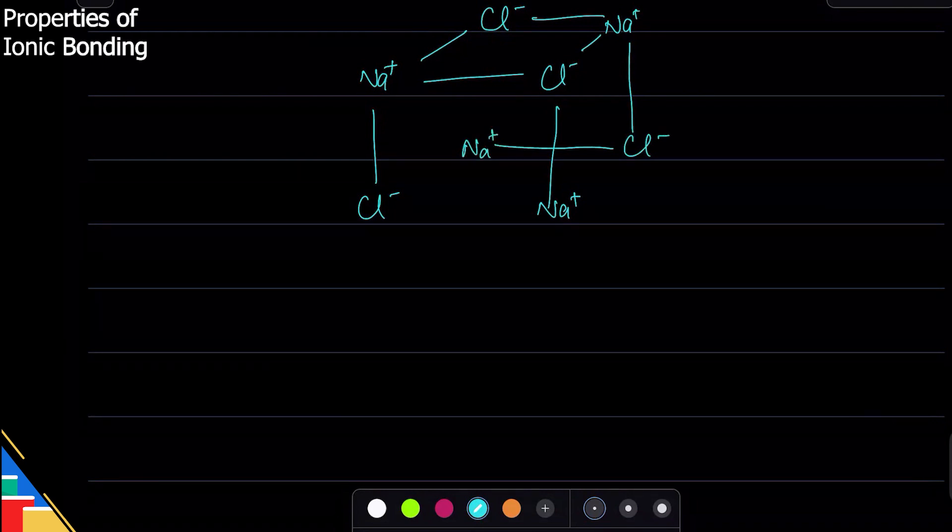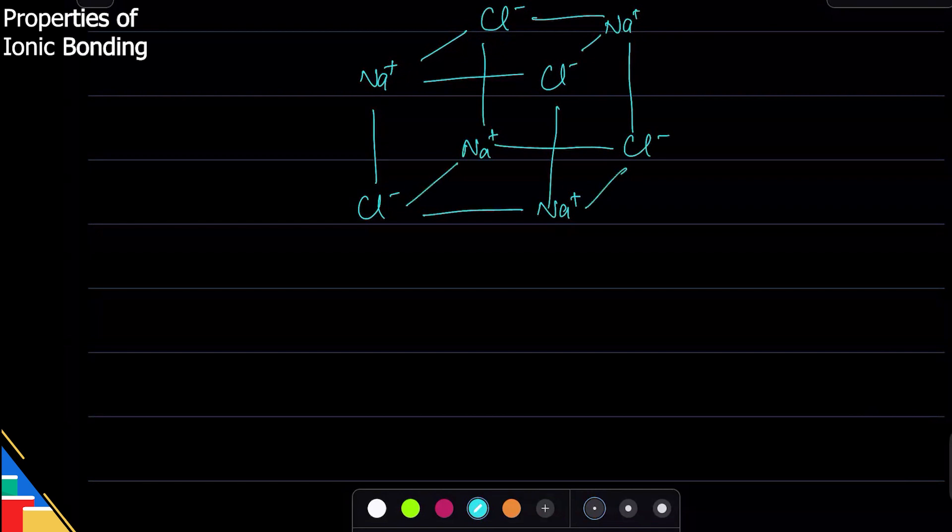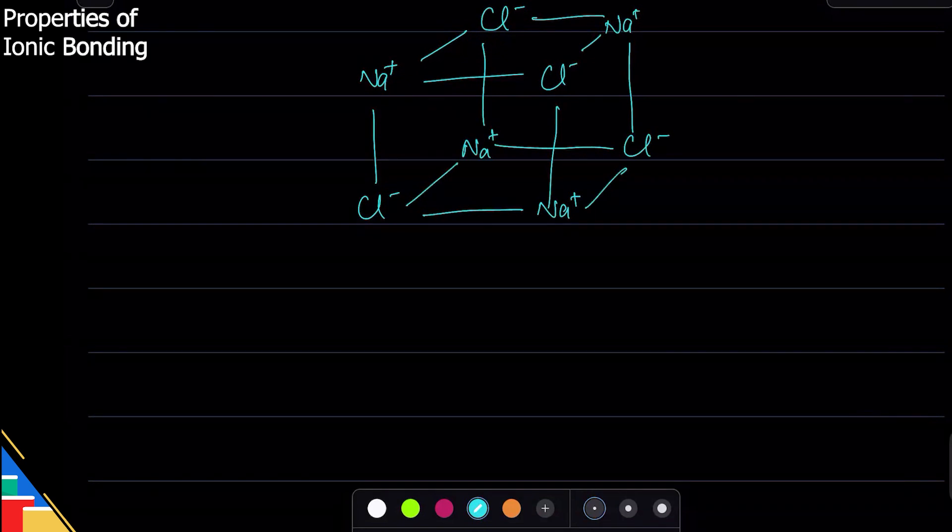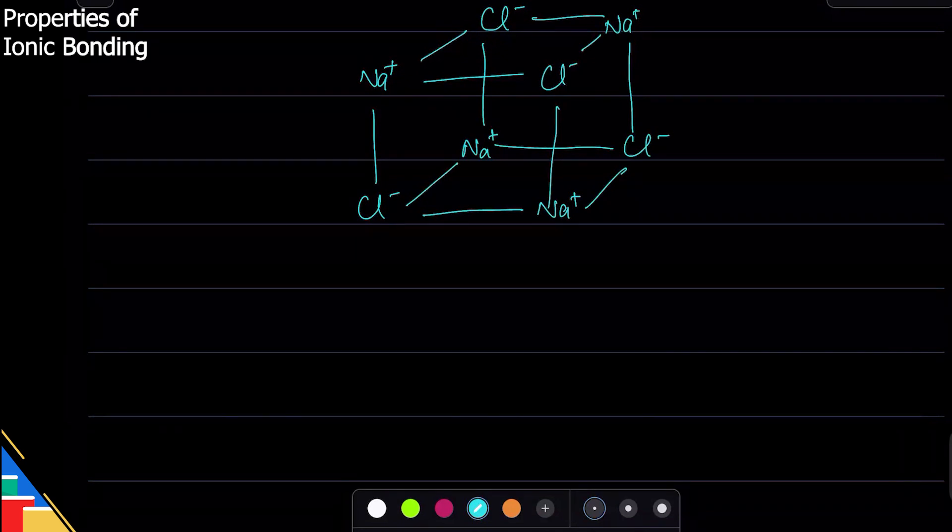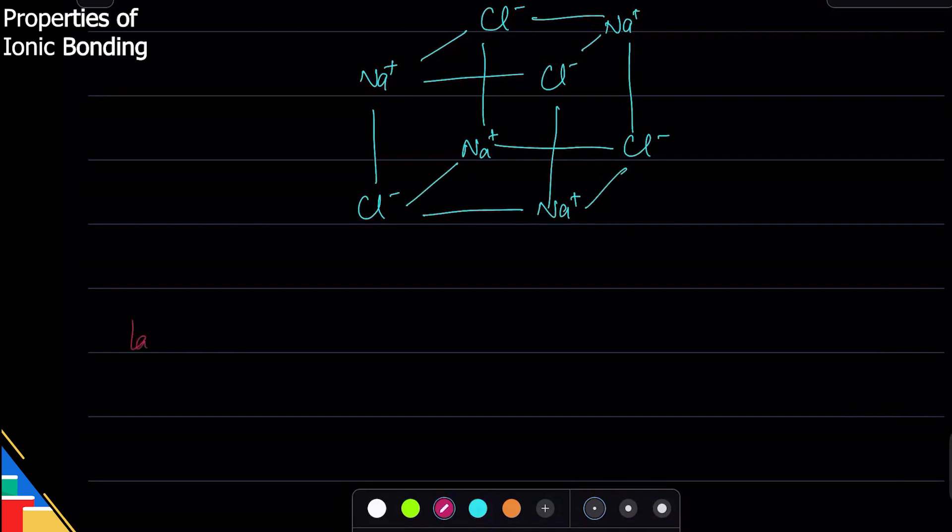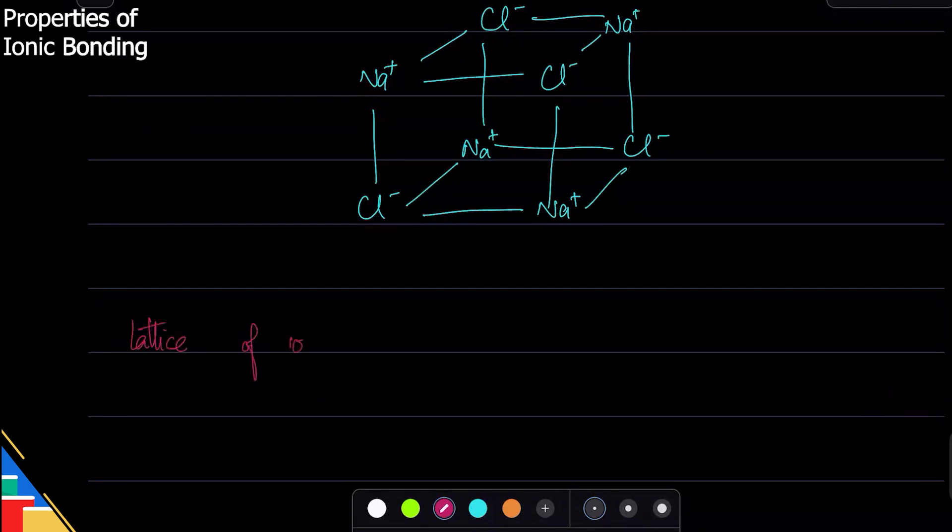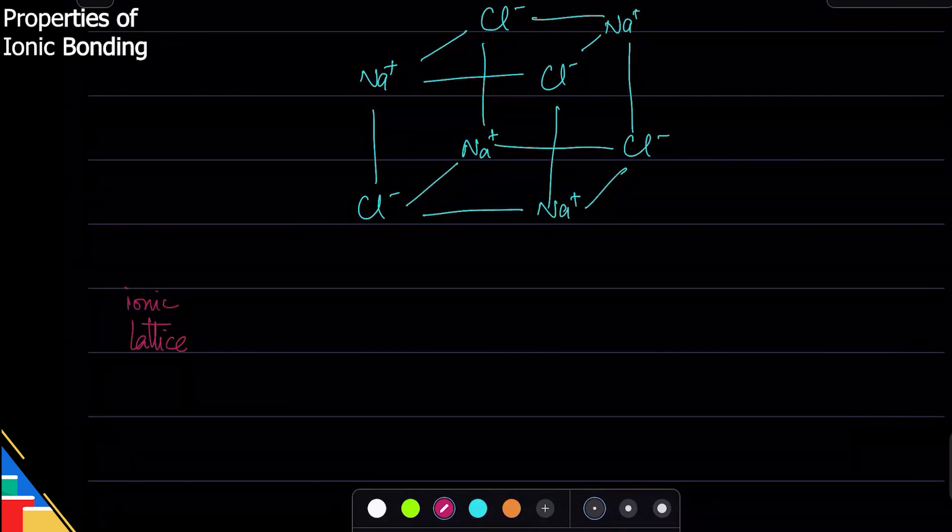This structure is called a lattice. There is a lattice of ions, or you can call it an ionic lattice. Lattice means a regular structure, so everything is in regular structure.